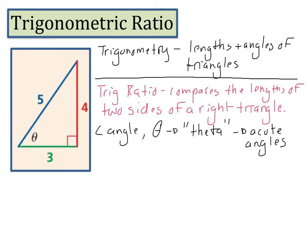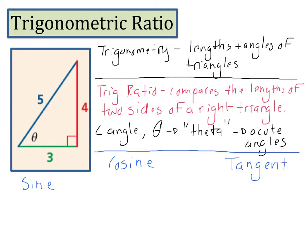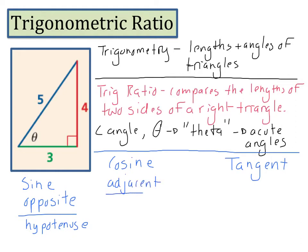Now that we've discussed trigonometry and trig ratios, let's describe the three main trig ratios. The three main trig ratios are sine, cosine, and tangent. The sine of an angle is the ratio of the opposite over the hypotenuse. The cosine of an angle is the ratio of the adjacent over the hypotenuse. And tangent is the ratio of the opposite over the adjacent.